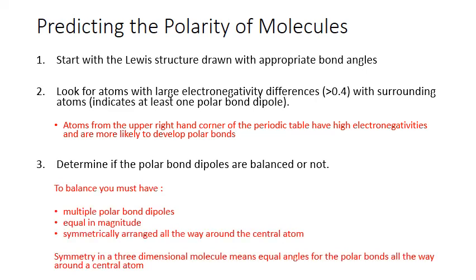There are a few conditions to consider when thinking about the balance of polarity. First, you have to have multiple polar bond dipoles in order for them to balance. Second, those polar bonds have to be equal in magnitude — equal in pulling strength. And they have to be symmetrically arranged all the way around a central atom. Symmetry in a three-dimensional molecule means equal angles for those polar bonds all the way around that central atom.